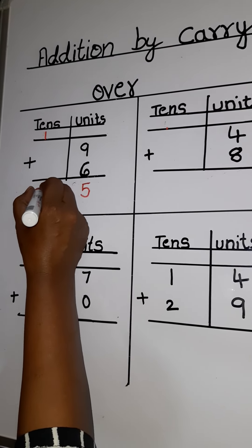What is the answer here? 12. We go to the next sum here. In the next sum, under unit's place, you have 7 and 0. 0 means no number.